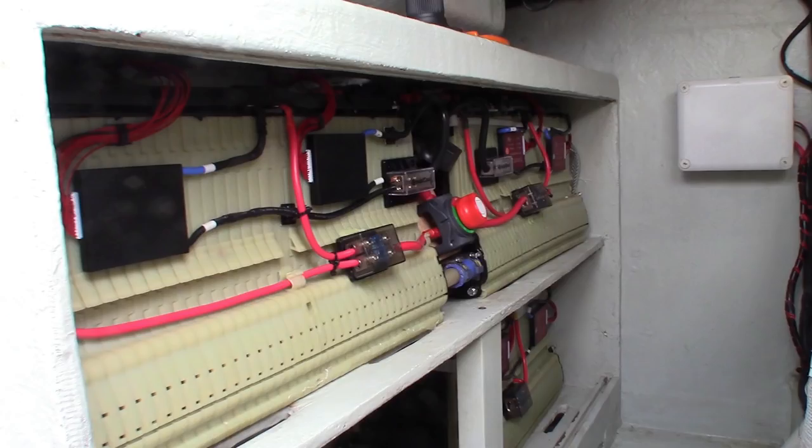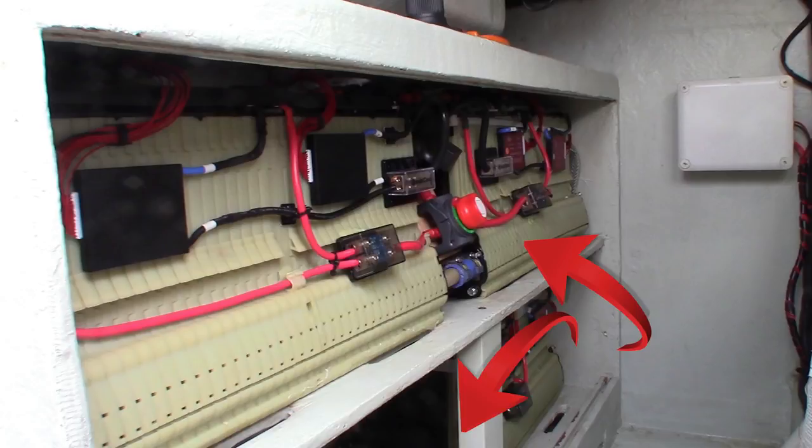This is what the batteries look like installed. Like I said, we have four modules, eight batteries. This makes up our bank. We have upper and lower selector switches, so that we can isolate our modules individually, should the need arise.